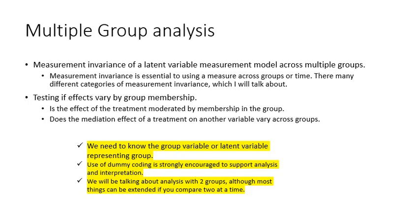So before we say anything more, just to make sure we know what we're talking about, we need to know the group variable or latent variable representing group. This is not a place where you can incorporate this with some sort of analytic technique where you're defining a group variable — the group variable needs to be known. You need to be able to use dummy coding to support the analysis. Most of the time in this group setting, we will be talking about analysis with two groups, but you can extend that to comparing more if you compare them two at a time.